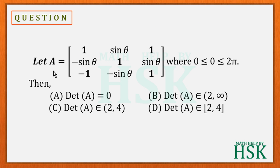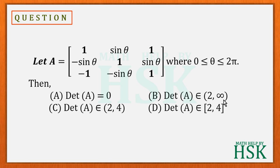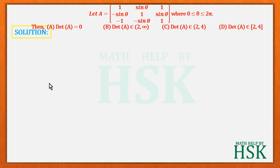The question gives a matrix A where θ is between 0 and 2π. We need to calculate the determinant of A and determine which option is correct. The four options are: det(A) = 0, det(A) belongs to the open interval (2, ∞), det(A) belongs to the open interval (2, 4), or det(A) belongs to the closed interval [2, 4].